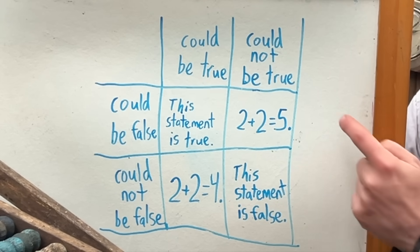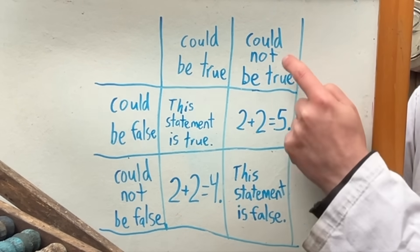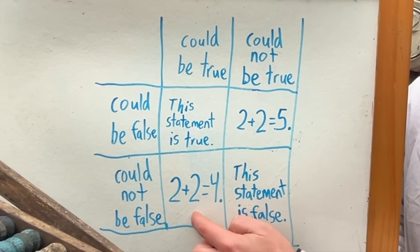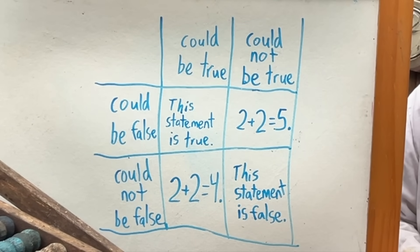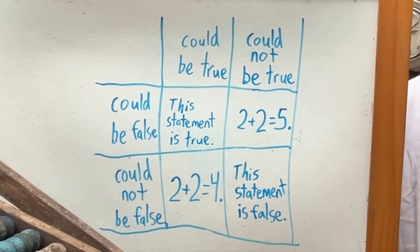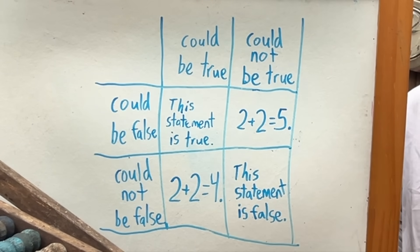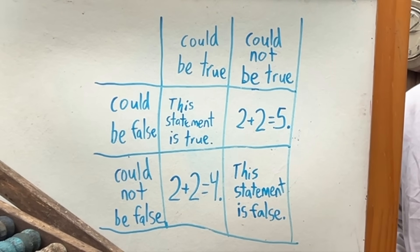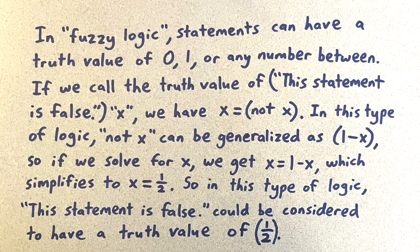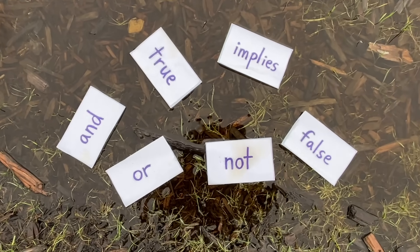Some systems of logic try to fix paradoxes like this by introducing more than two truth values. Perhaps there are four possible truth values: a statement like 'two plus two equals five' could be false and could not be true; 'two plus two equals four' could be true and could not be false; 'this statement is true' could be true or could be false; and 'this statement is false' can't be true and can't be false. There's even fuzzy logic, where statements can have a truth value of zero, one, or any number in between — and within that system you can show that the truth value of 'this statement is false' is one half.